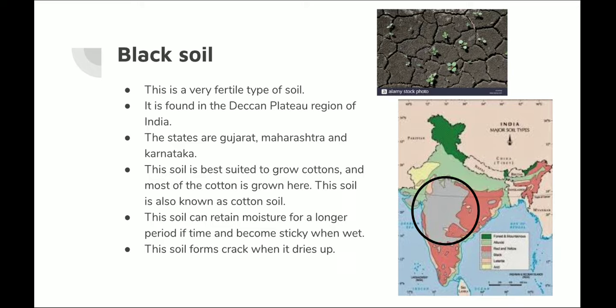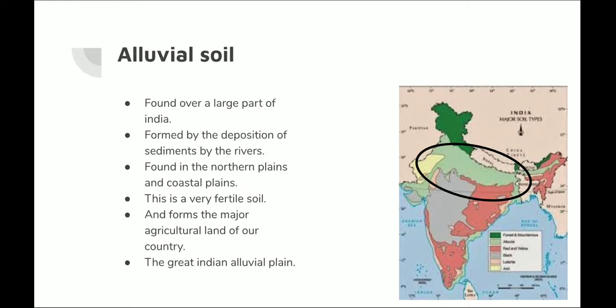Black soil can retain moisture for a long time. When wet, it becomes sticky, and when it dries it cracks up. The color of this soil is black because it is said to be the remains of a volcanic eruption — millions of years ago, when there was a volcanic eruption in the Deccan Plateau region, the remains of the lava turned into this black soil, which is why its color is black.